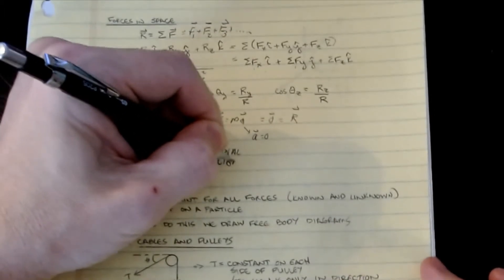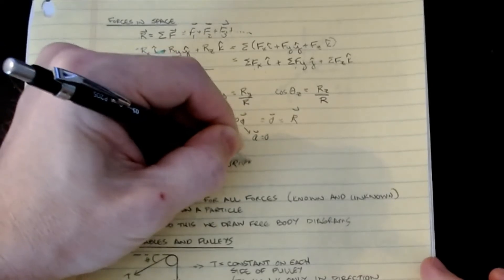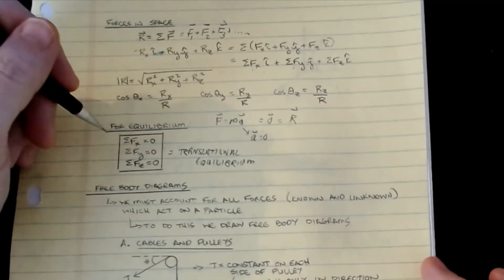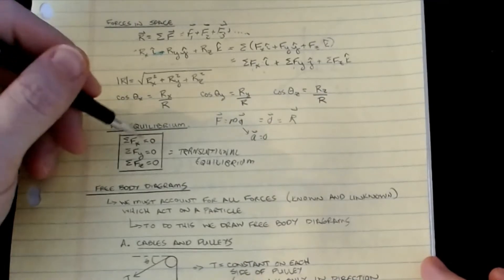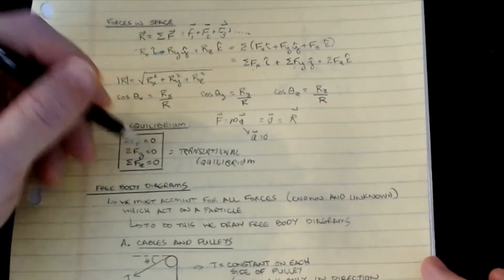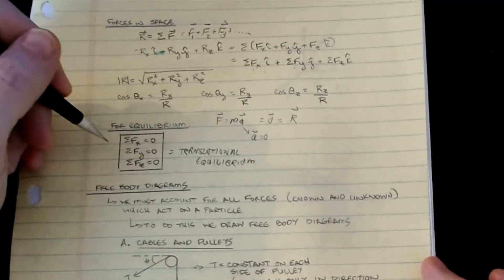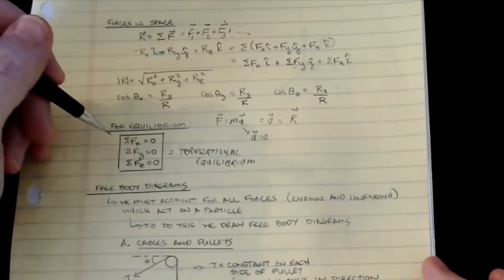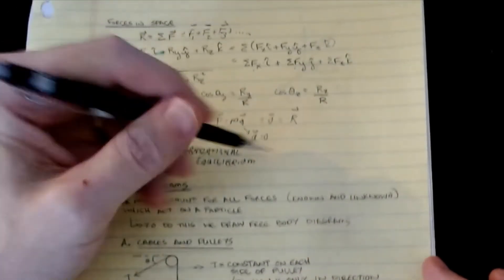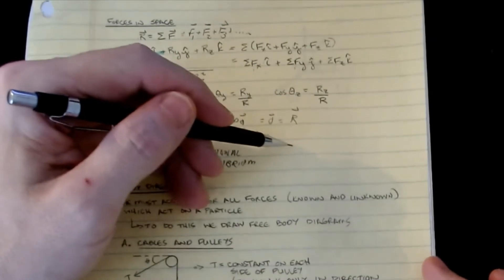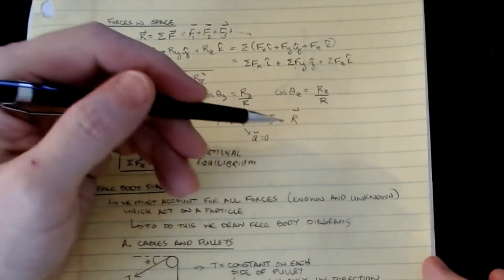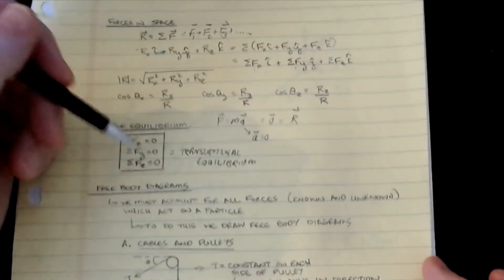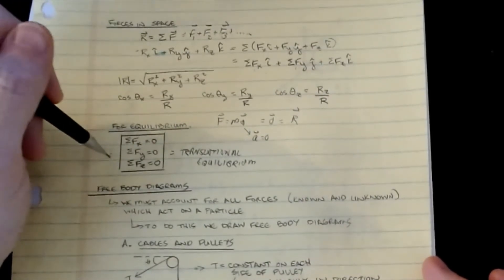We call it translational equilibrium because forces cause motion or displacement in a given direction, so unless the force is zero in that direction there will be motion. To fully define equilibrium it's not only translational — there's also a rotational component, which we'll talk about in a day or two.